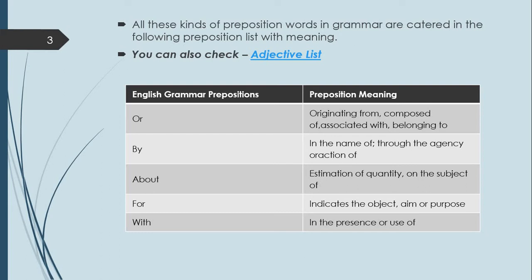The preposition 'for' indicates purpose. For example: 'He is coming here for meeting.' One important point to remember: after the preposition 'for,' we always use the fourth form of the verb — that is, the verb with 'ing' added to the first form, which is also called the ing-form or present participle, such as coming, eating, running, walking. So after 'for,' we always use the verb's ing-form, and this preposition is basically used to express a purpose.